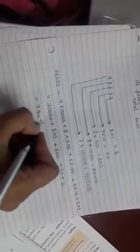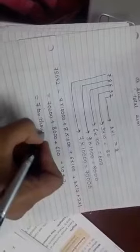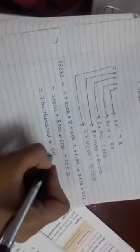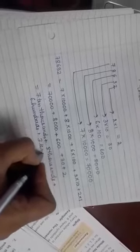It also can be written in another way. 7 is at the place of 10,000, then 8 at the place of thousands, 6 at the place of 100. But you have to put plus signs in between them. Then 3 at the place of tens and 2 at the place of ones.